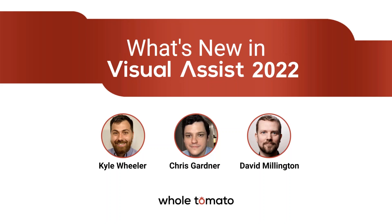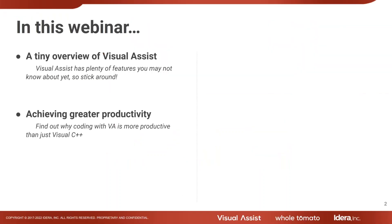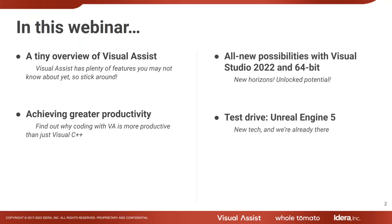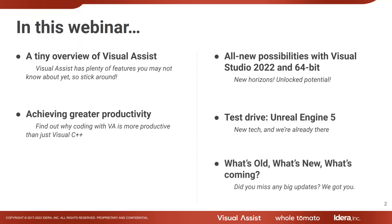The plan for today is pretty simple. We're going to give a little overview of Visual Assist — if you are new to us, this might be helpful to see what you can do. Then we'll move into what the future looks like and what we've done in the past year. A lot of work behind the scenes in development. We'll do a test drive of Unreal Engine 5, new from Epic Games, and cover what's old, what's new, and what's coming.